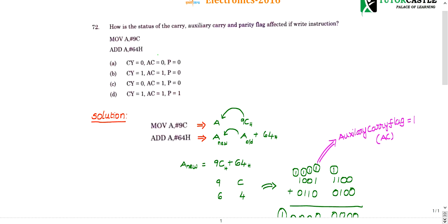Question number 72: how is the status of the carry, auxiliary carry, and parity flag affected after doing these two instructions? This is a simple and easy question. First we'll decode these instructions and get the operation of the ALU. Based on the results of the ALU, we can see how the flags are affected — these are called status flags, and they change based on the operation of the ALU.